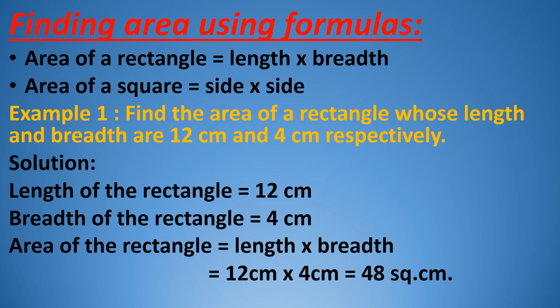Learn the way of doing the questions. First write down whatever is given — length of the rectangle, breadth of the rectangle — then write down the formula: area of the rectangle equals length multiplied by breadth. Formula carries marks, so don't skip it. Also, units carry marks in the answer. It is equal to 12 multiplied by 4, which is 48 square centimeters.